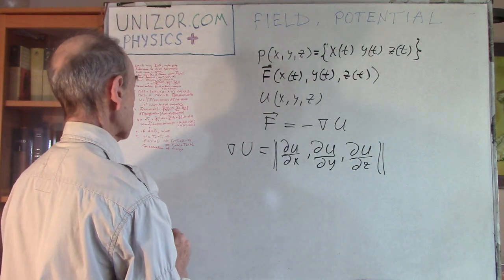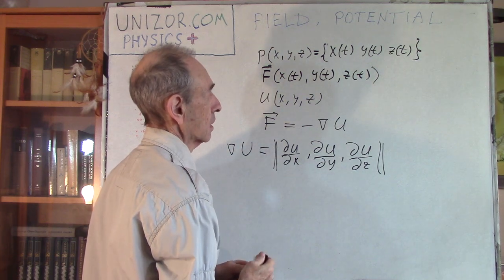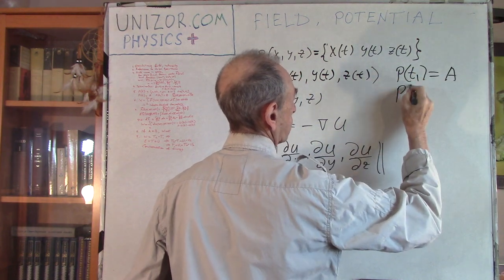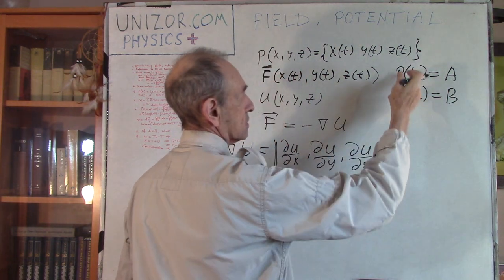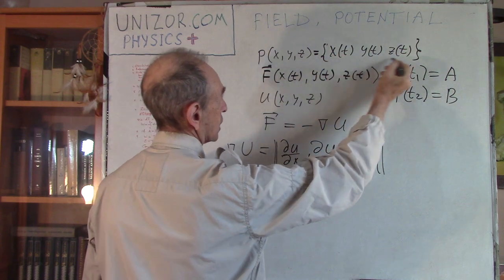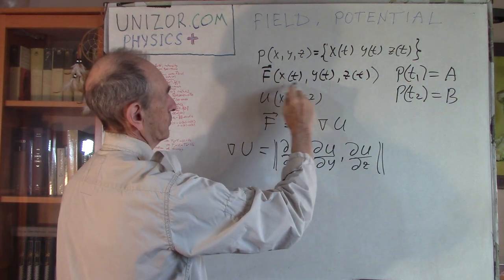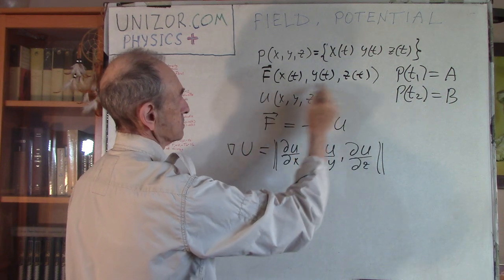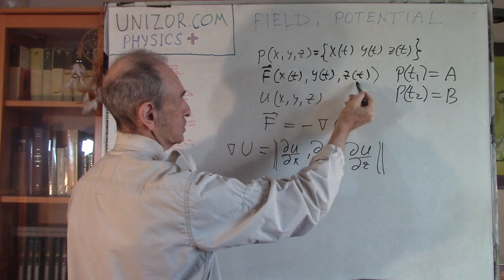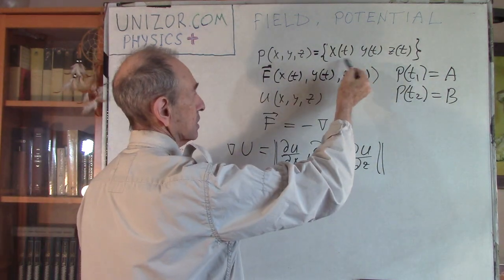This is my point which is moving, and as I was saying, it moves from point A to point B during the time from t1 to t2. At each point on the trajectory, the coordinates x, y, and z depend on time. There is a force function, and since the position of the point depends on time, F becomes a function of t. The same applies to U - since position is a function of time, U also becomes dependent on time.